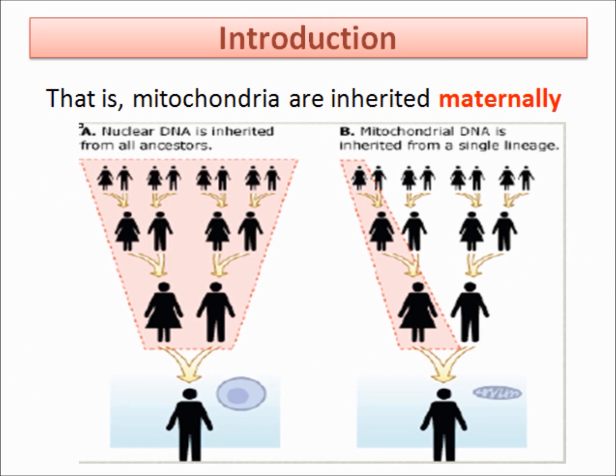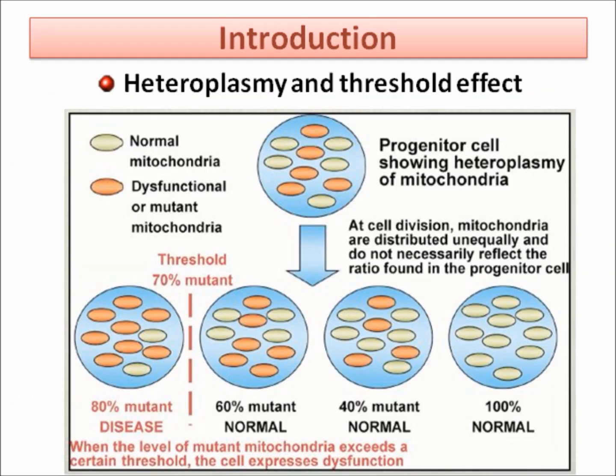At first, we are all the same. But when we are exposed to mutagenic agents such as free radicals, differences among us appear, known as heteroplasmy. When the level of mutant mitochondria exceeds a certain threshold, the cell expresses this dysfunction.